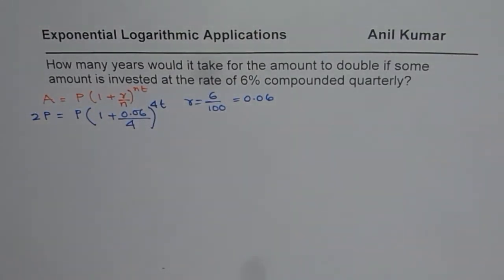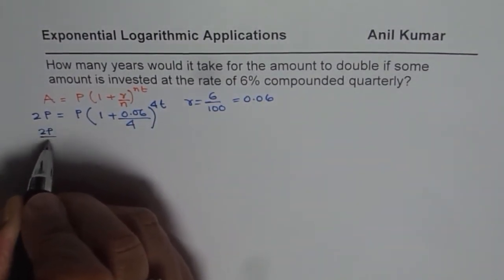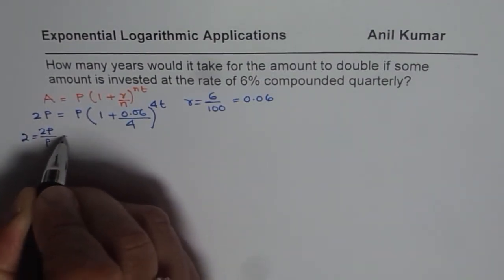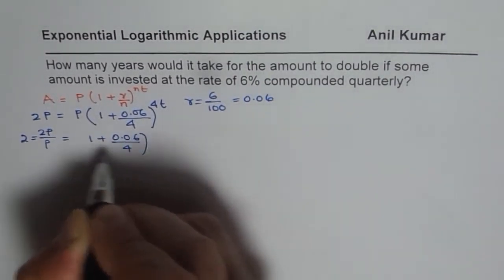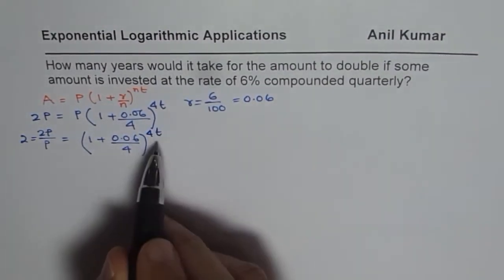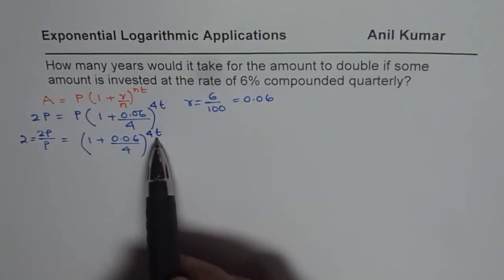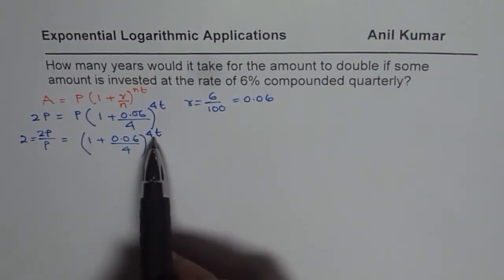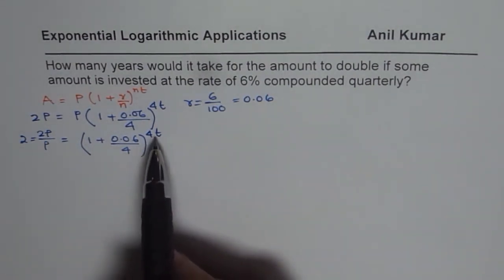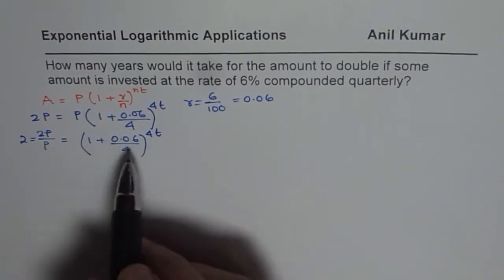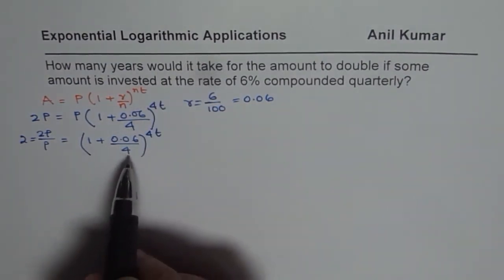That becomes our formula. To find time, we first divide both sides by P, so we get 2P divided by P which equals 2, and that equals 1 plus 0.06 over 4, to the power of 4T. Now to solve this equation, we could do trial and error — substituting different values of T such as 9, 10, 11, 12 — and see which value brings the right side closest to 2. But we will use logarithms to solve this exponential equation.